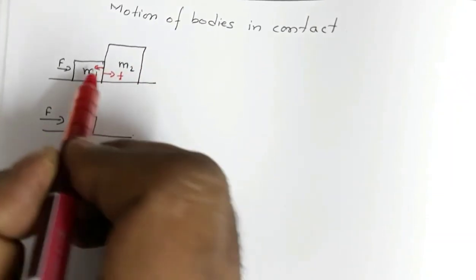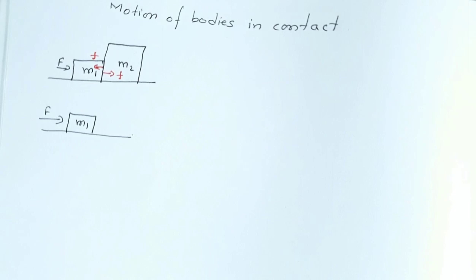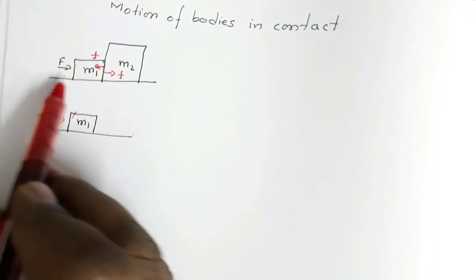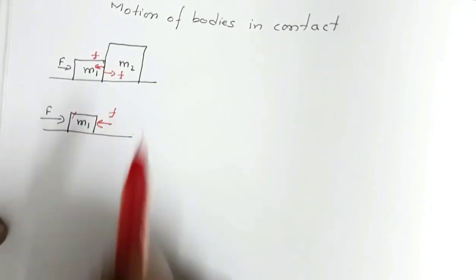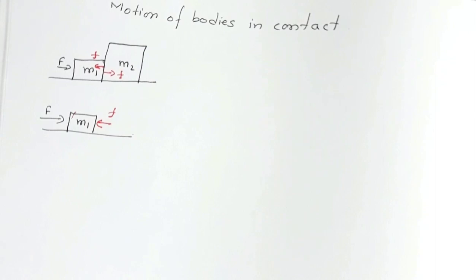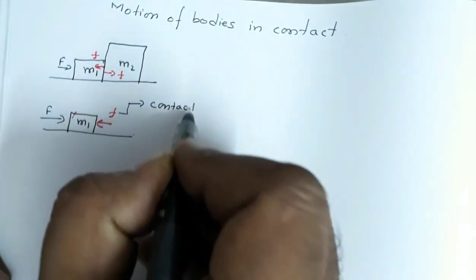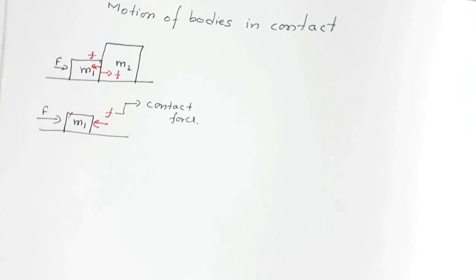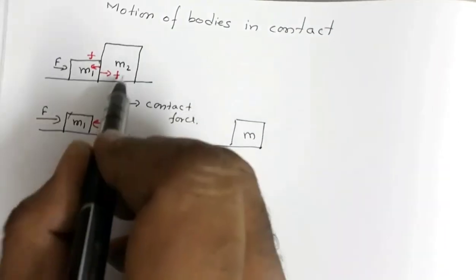m2, as a reaction to this force, will also exert an equal and opposite force on m1 — also given by small f. So this block of mass m1 is acted upon by external force F and the contact force f exerted by m2 on m1. This f is the contact force.